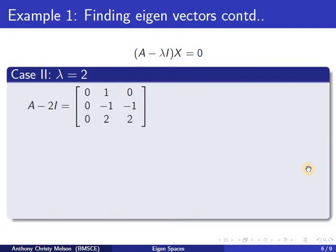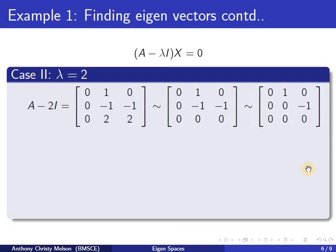Similarly, for lambda equal to 2, A minus 2I will be the matrix as shown here. Again, this matrix is of rank 2. We find r3 is a multiple of r2, therefore the last row reduces to 0. In fact, for any matrix A when finding eigenvectors, the last row of A minus lambda I can always be replaced by 0, since determinant of (A minus lambda I) is 0. Applying row transformations, this further reduces to the matrix shown here, and we find rank of A minus 2I is 2.